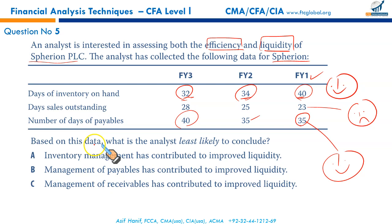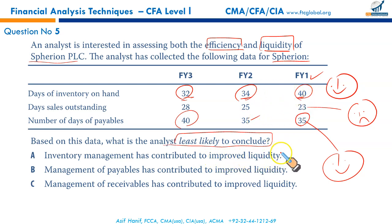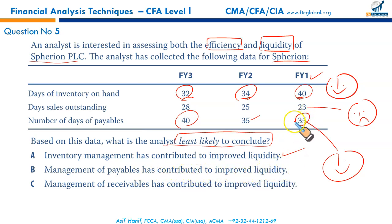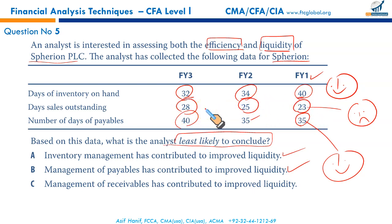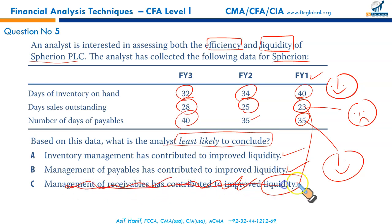The question asks: based on this data, what is the analyst's least likely conclusion? Inventory management has contributed to improved liquidity — correct, as inventory turnover has increased. Management of payables has contributed to improved liquidity — correct, as delaying payments to suppliers results in more cash. Management of receivables has contributed to improved liquidity — this is NOT correct. Receivables are paying less frequently and delaying payment, which deteriorates liquidity rather than improving it. That makes C the least accurate conclusion and thus the right answer.